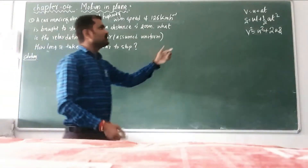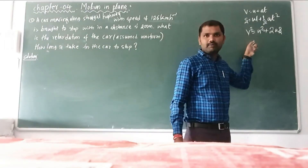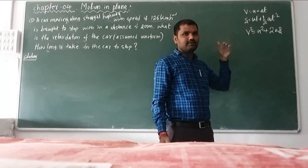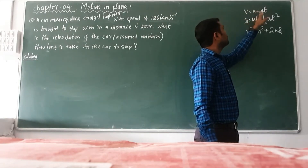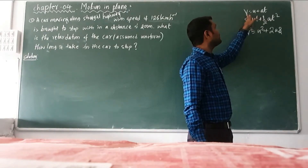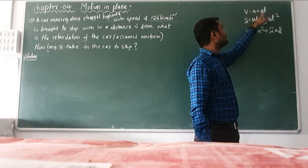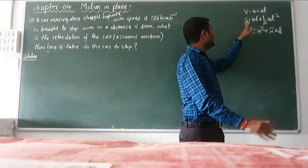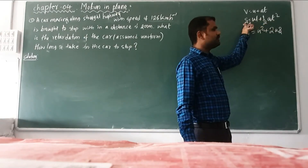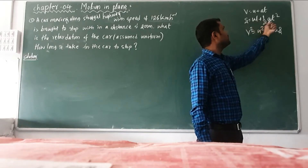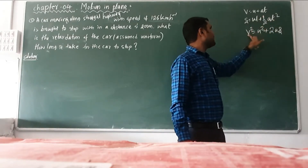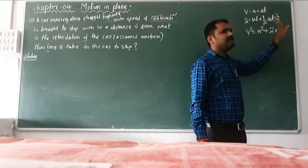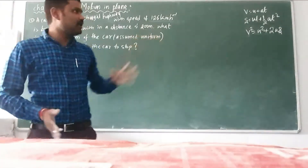By knowing the dynamic equations studied in the first chapter, that is motion in a straight line, let us solve a simple problem. The first equation is V equal to U plus AT, where V is final velocity, U is initial velocity, A is acceleration, and T is time. The second equation is S equal to U T plus half A T square, where S is displacement. The third equation is V square equal to U square plus 2AS.